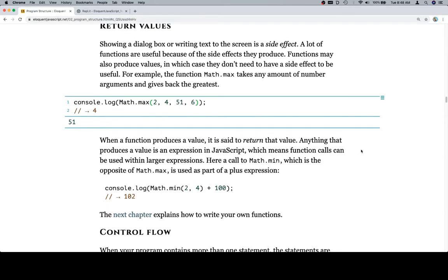When a function produces a value, it is said to return that value. Anything that produces a value is an expression in JavaScript, which means function calls can be used within larger expressions. Here, a call to Math.min, which is the opposite of Math.max, is used as part of a plus operation.